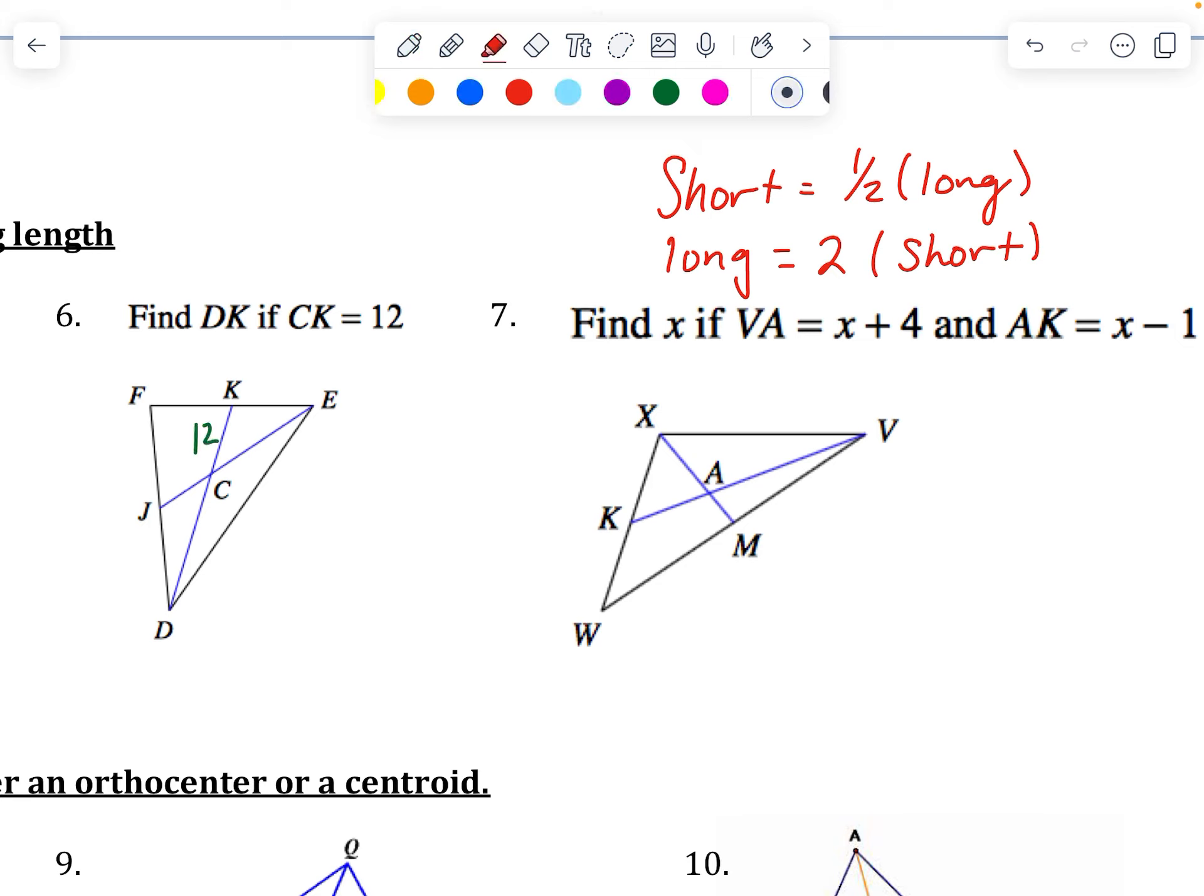CK is given as 12. That is this part, the short part. So the long part must be 24, and the whole thing must be 36.